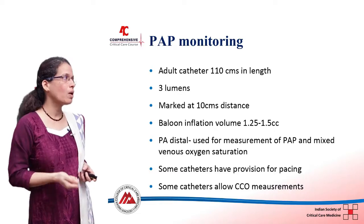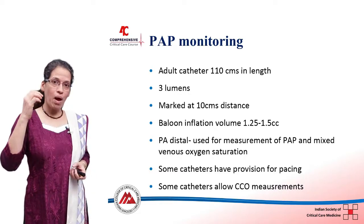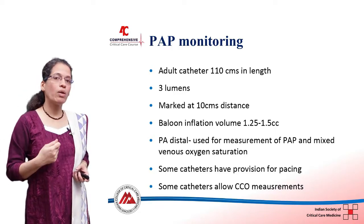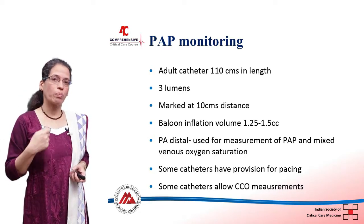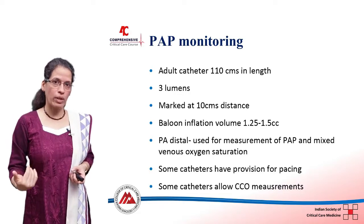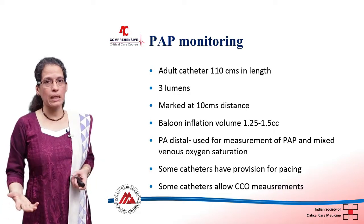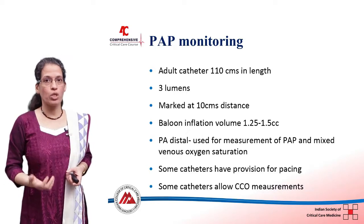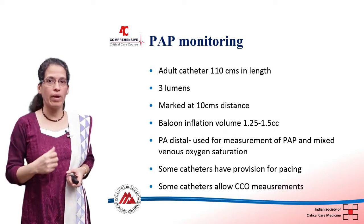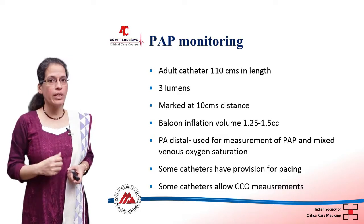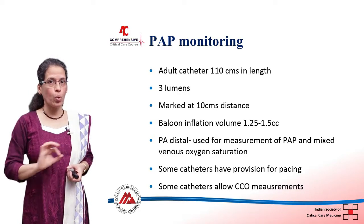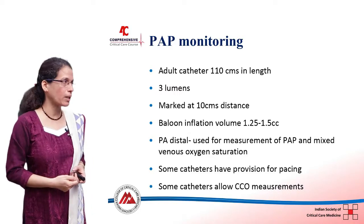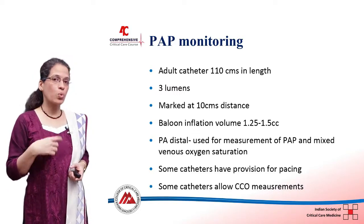The catheter is marked at every 10 centimeters so you know the depth during insertion. The balloon inflation volume is 1.25 to 1.5 cc's. Always ensure the catheter wedges in position only after inflating to full volume — if it wedges with less volume, you know you are too distal and need to retract the catheter a little bit.